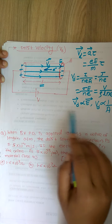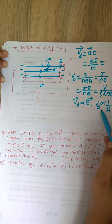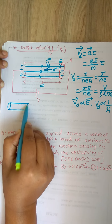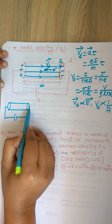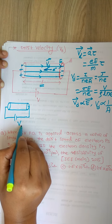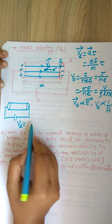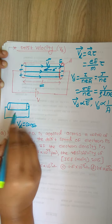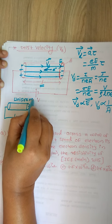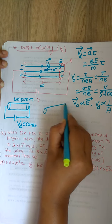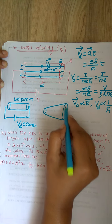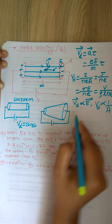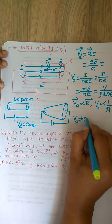Similar to current density, drift velocity is also variable. For example, if the shape of the conductor is uniform, the drift velocity of the electrons moving inside is constant and E is constant. But whenever the shape of the conductor is non-uniform, the electric field is also non-uniform and variable, so drift velocity is also variable and not constant.